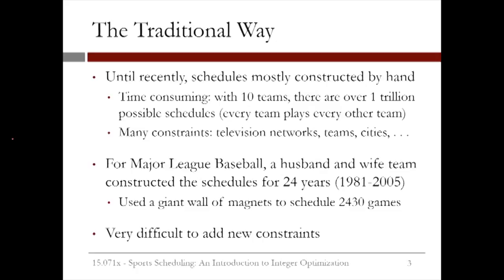For Major League Baseball, a husband and wife team constructed the schedules for 24 years. They mostly built the schedule by hand and used a giant wall of magnets to schedule 2,430 games each year. Not only is this approach time consuming, but it's very difficult to add new constraints. If one new constraint is added, that might make the schedule infeasible and the process would have to start all over again.